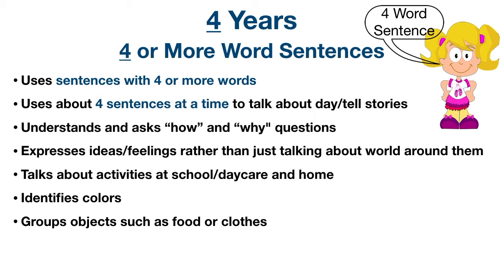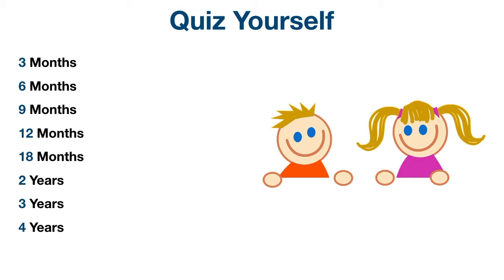Finally, at four years old, the trick to remember is 'four or more word sentences.' The child uses sentences with at least four words and uses four or more sentences when talking about their day or telling a story. They have a deeper understanding of abstract concepts and ask how and why questions. They express ideas and feelings, talk about school, daycare, or home. Parents and caregivers understand most or all of their speech, strangers can typically understand them, they can identify colors, and can group objects into categories like food or clothes.